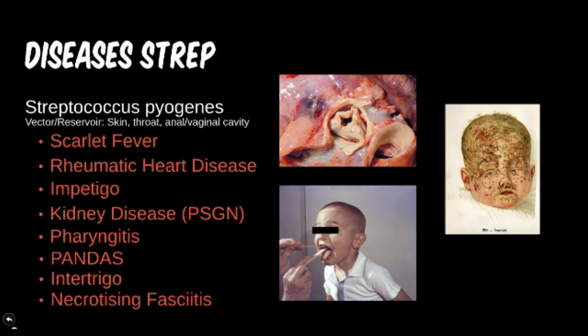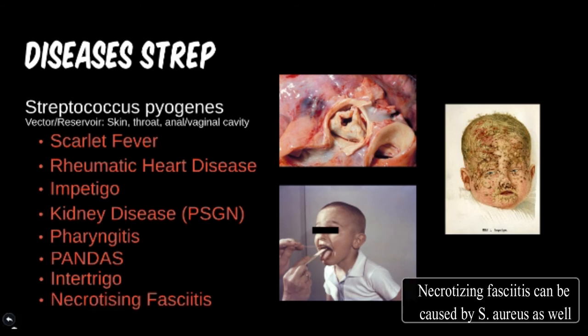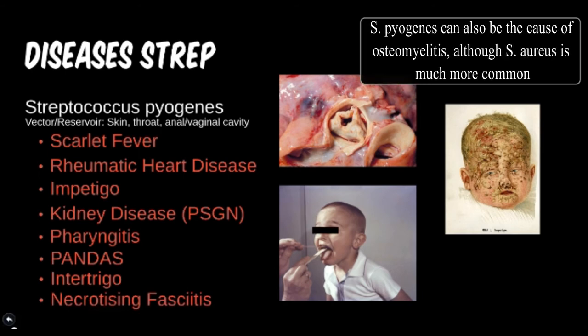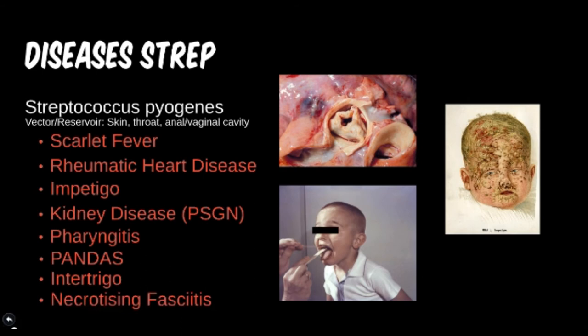Necrotizing fasciitis is a more serious skin and soft tissue infection leading to tissue breakdown. This list of diseases is not exhaustive — these are some of the more frequent diseases associated with these bacteria. Necrotizing fasciitis, or neck fash, is fairly distinctive in that it causes foul-smelling tissue necrosis. If not cleaned and treated soon, this infection can lead to loss of limb, sepsis, and can become fatal.